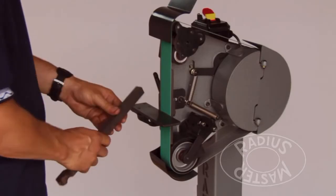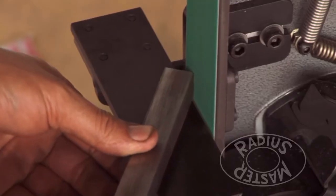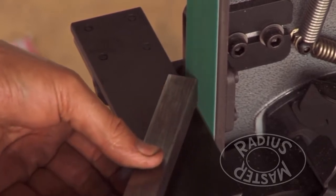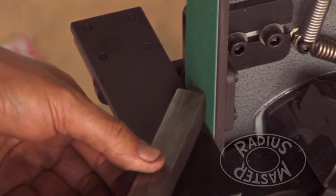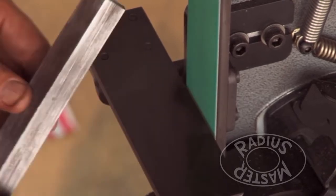Squaring ends and accurate chamfering greatly improves component quality over conventional deburring methods. Again, perfect tracking stability allows the use of all of the belt.